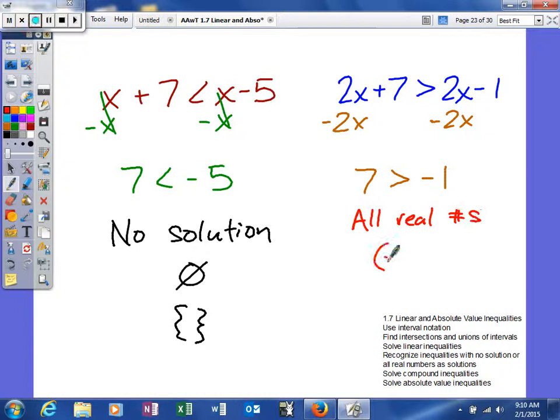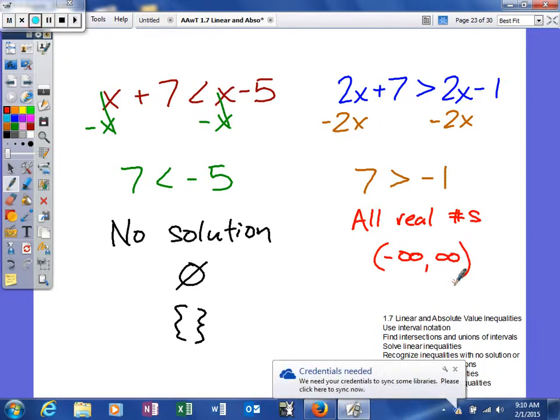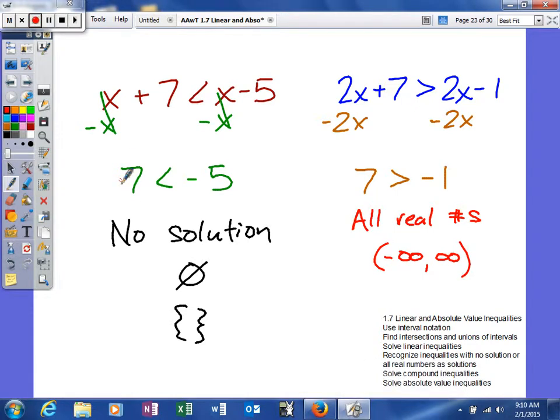And your interval notation for that would be positive infinity comma negative infinity. So basically anything for positive and negative infinity will work. So keep that in mind. Just a quick reminder, make sure that when your variables cancel, you look to see if the inequality is true to determine how you'll get your answer. Thank you.